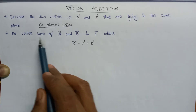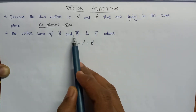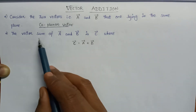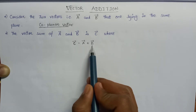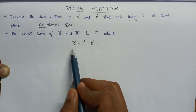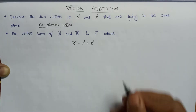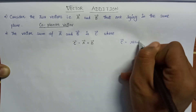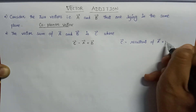Now the vector sum of these two quantities, A vector and B vector, that are coplanar to each other, is another vector — C vector — where the basic addition of A vector and B vector is given as C vector. Here the C vector is a resultant of A vector and B vector. So C vector is the resultant of A vector plus B vector.